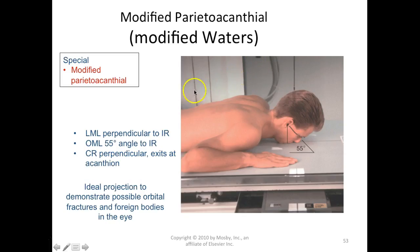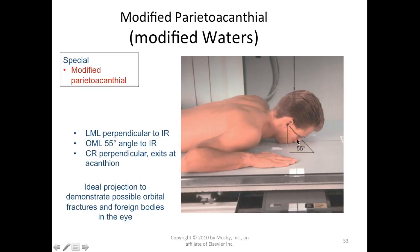For the modified Waters, the lips-meatal line (LML) is perpendicular to the IR, which means the OML forms a 55-degree angle with the IR. The CR exits again at the acanthion — both Waters projections are centered at the acanthion. The modified Waters is the ideal projection to demonstrate possible orbital fractures or foreign bodies of the eyes, so if you're doing an MRI screening Waters or worried about a blowout fracture, you'll do both Waters and modified Waters.